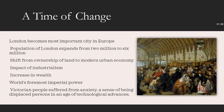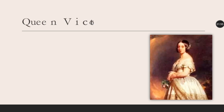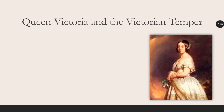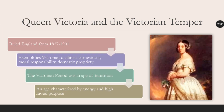Victorian people suffered from anxiety, a sense of being displaced persons in an age of technological advances that was opposite to the ownership of land and working for the land. At this time, Queen Victoria and the Victorian temper started to emerge. Queen Victoria ruled England from 1837 to 1901.